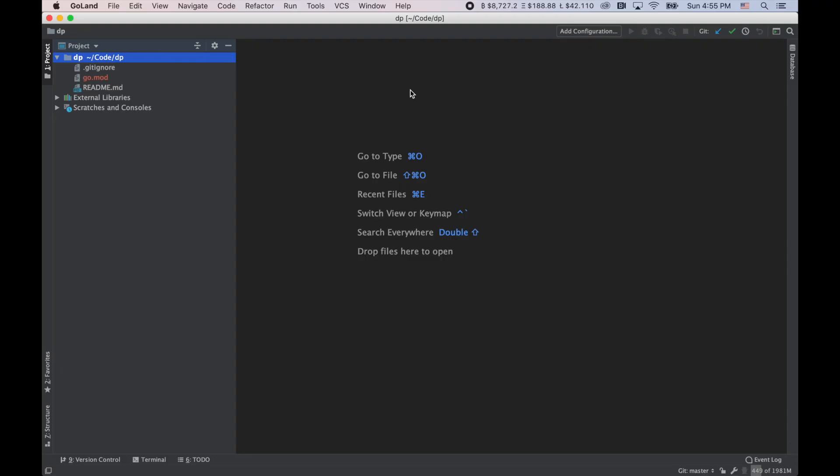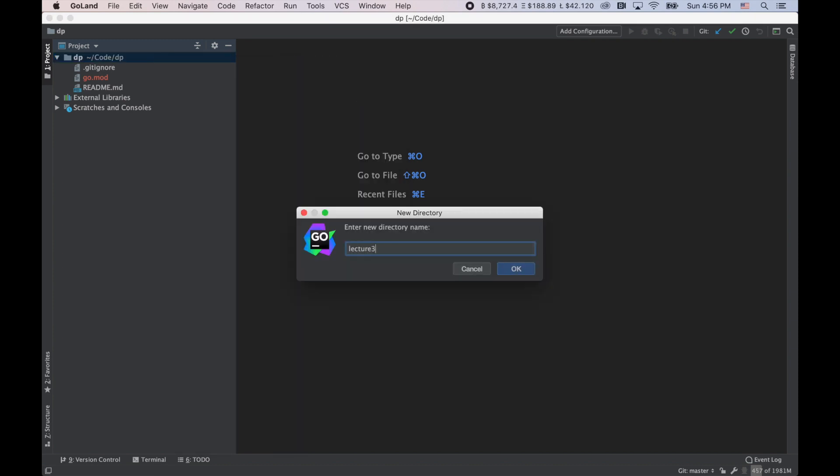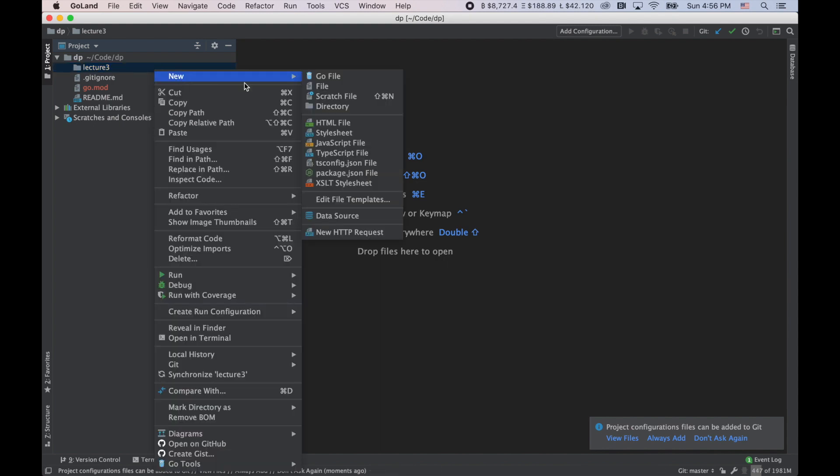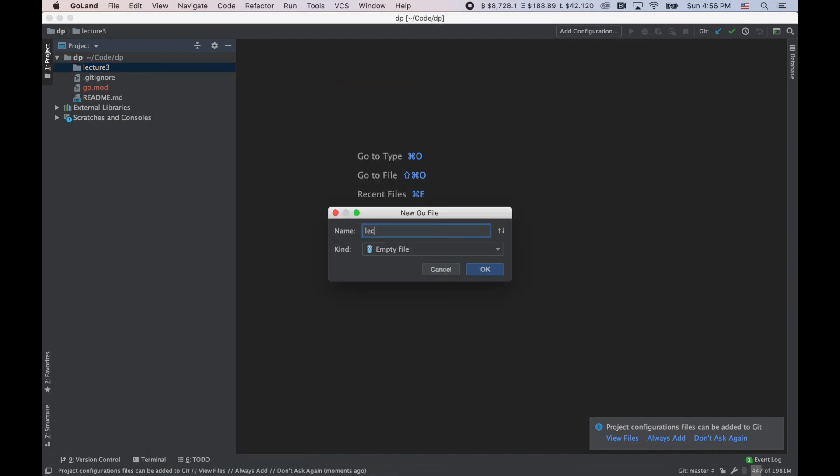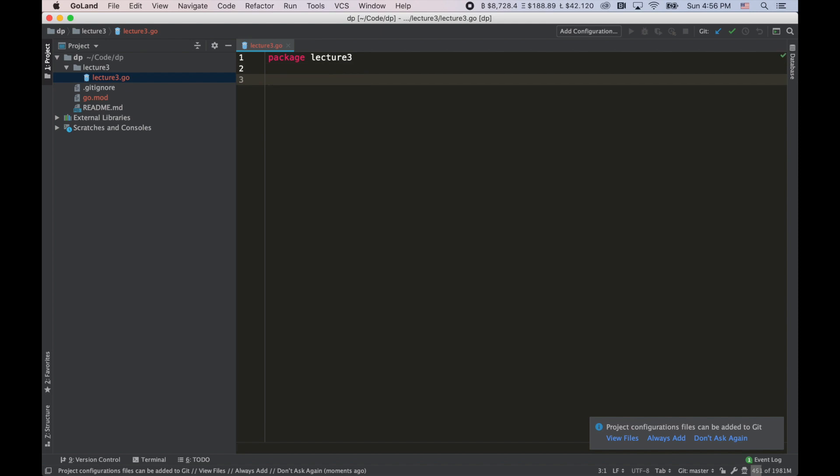What's up, guys? We are ready to start implementing our function. I've got a Go land here, which is part of IntelliJ. I'm going to create a new folder, lecture3. And in this folder, I'm going to create a new file, lecture3.go. Now the next thing that I would like to do here is to give a definition to the problem. Basically describe what we are going to do.